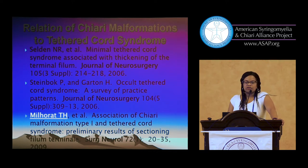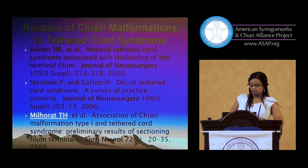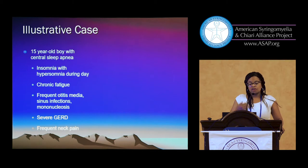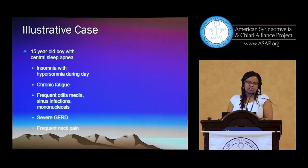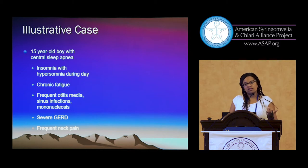The relation of Chiari malformations to tethered cord — across the country, reports are about 15%. In our own series, we saw about 7–8% correlation with Chiari 1 malformation and tethered spinal cord. A severely tethered cord can cause Chiari symptoms, but I have not seen it in isolation. If the patient has a severely tethered cord, they will also have tethered cord symptoms, and usually that will be more prominent than the Chiari symptoms. But if it's bad, they can have symptoms in the upper extremities and symptoms of traction throughout the neuroaxis.